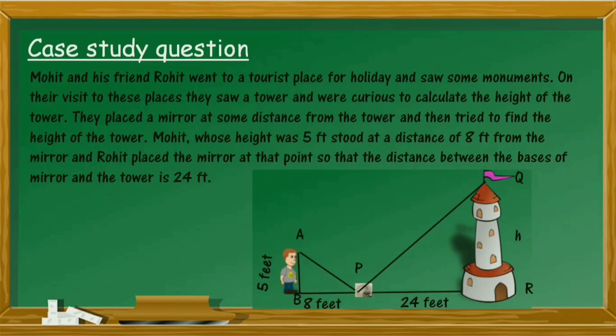Study question: Muhit and his friend Rohit went to a tourist place and saw some monuments. They were curious to calculate the height of a tower, so they placed a mirror at some distance from it. Muhit, whose height was 5 feet, stood at a distance of 8 feet from the mirror. The distance between the base of the mirror and the tower is 24 feet. Based on this situation, we have some questions.